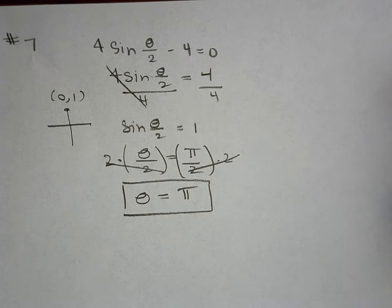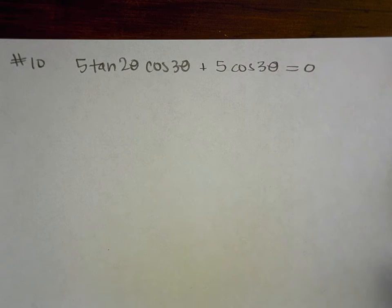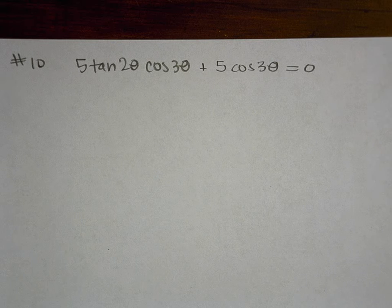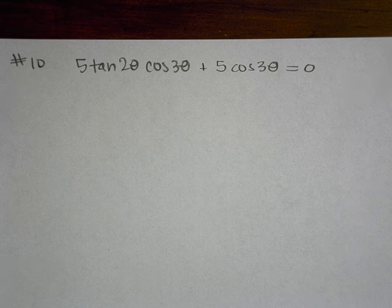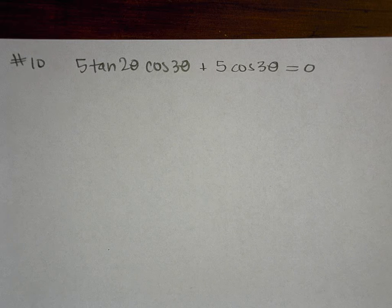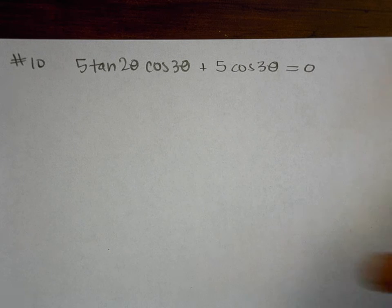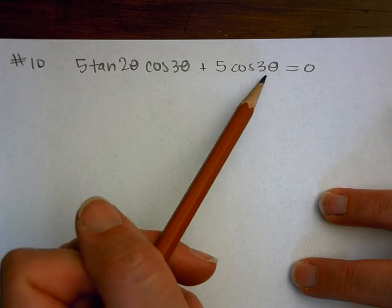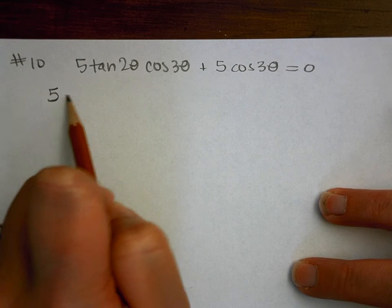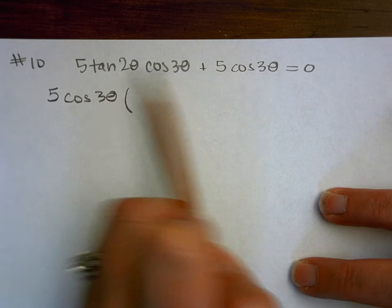That was pretty easy. Okay, let's take a look at another one. Okay, so number 10. So the same kind of process. So in this case I don't have like a single trig function isolated, so that means I need to be able to use zero product property, which means I need to be able to factor. So I look to see what can I factor out of everything, and I have a 5 common and then I also have a cosine 3 theta.